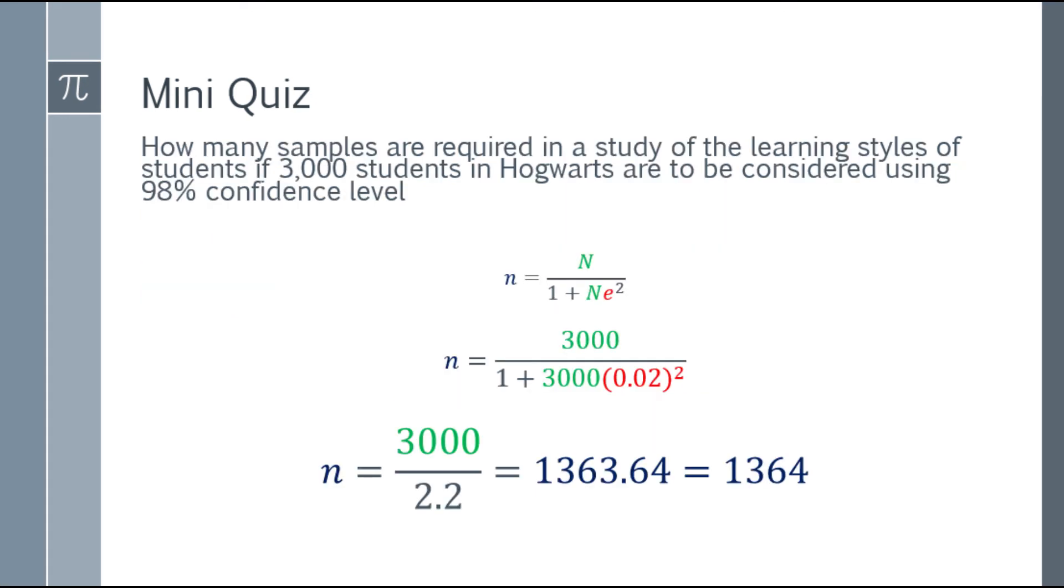Next, you have to place the formula and substitute it. So n equals 3,000 over the quantity 1 plus 3,000 times 0.02 square. So again, if we're going to solve it, 0.02 squared times 3,000 plus 1, and the denominator will be 2.2. For the numerator, it will stay the same. So the answer for this one is 3,000 divided by 2.2 will be 1,363.64. Round up and 1,364 is the answer.